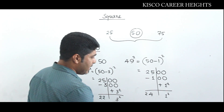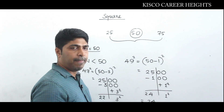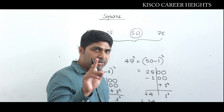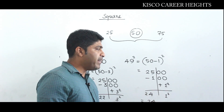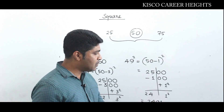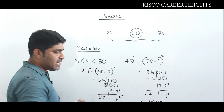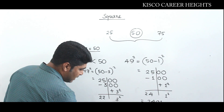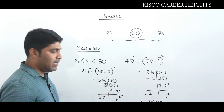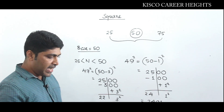For 49², the left side is 24. The right side needs 2 digits, but 1² = 1 is only a single digit, so put a 0 to its left — giving 01. Therefore, 49² = 2401. For 47², the left side is 22. The right side is 3² = 9, again a single digit, so write it as 09. Therefore, 47² = 2209.